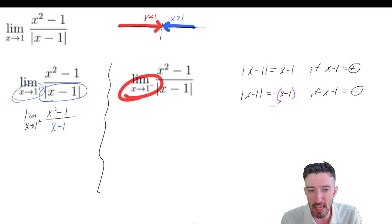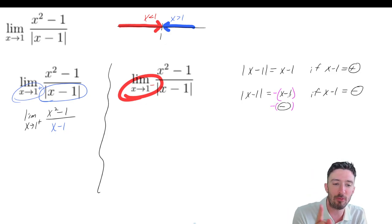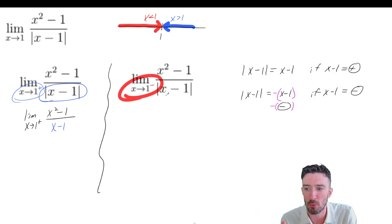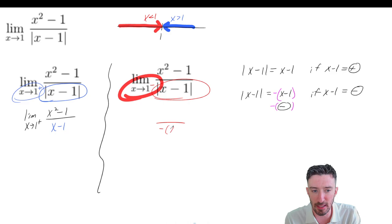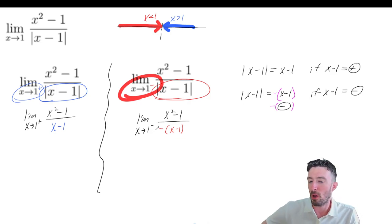But on the bottom, we're going to replace the absolute value of x minus one with the negative of x minus one. Now, on the top, it's x squared minus one. And we still have the limit as x approaches one from the left.